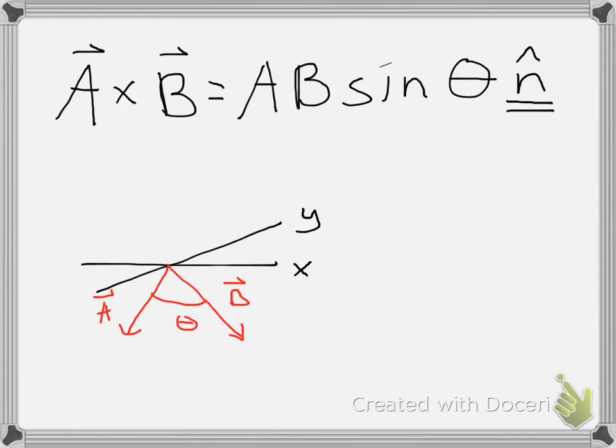In this case, normal means normal to the plane formed by the vectors A and B. If you remember from geometry, any two lines define a plane. The same thing goes for vectors. The vectors A and B, regardless of how they're oriented, will together form a plane.